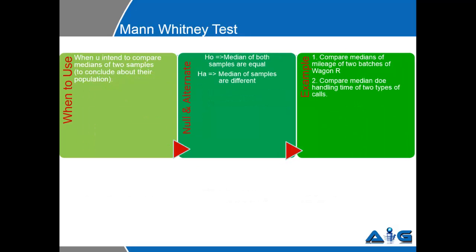The second test we discuss is the Mann-Whitney test. Mann-Whitney test is to be used when we intend to compare the median of two samples to each other — that is, to conclude about their population. If it is a null hypothesis, it would mean that the medians of both samples are equal. And if alternate hypothesis, it would mean that the medians of the samples are different, which you would decipher based on the p-value.